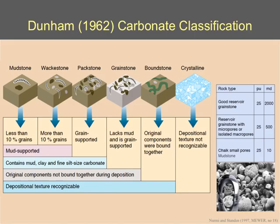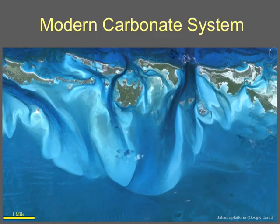On the other end of the spectrum we have mudstone, which is a very fine kind of calcitic mud. Although porosity can be quite high, the permeability is extremely low. This can act as a permeability barrier within the carbonate sequence that compartmentalizes the carbonate.